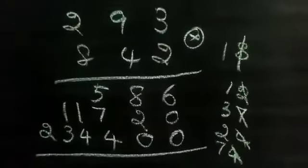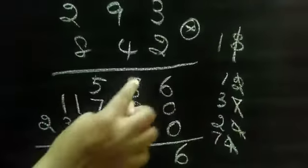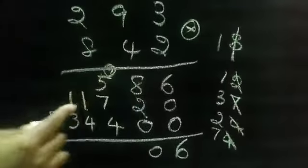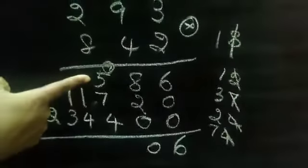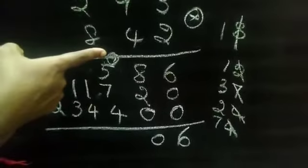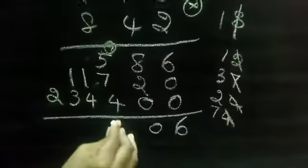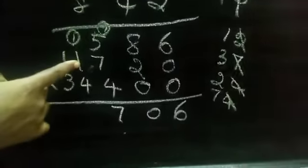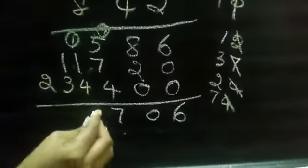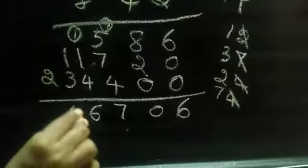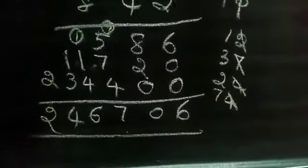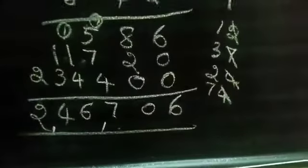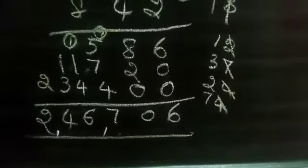Next we just add. So 6, 8 plus 2, 10. So carry over 1. So 7 plus 5, 12. 12 plus 1, 13. 13 plus 4, 17. So carry over 1. 1 plus 1, 2. 2 plus 4, 6. Here 4, here 2. So answer is 2 lakh 46,706.